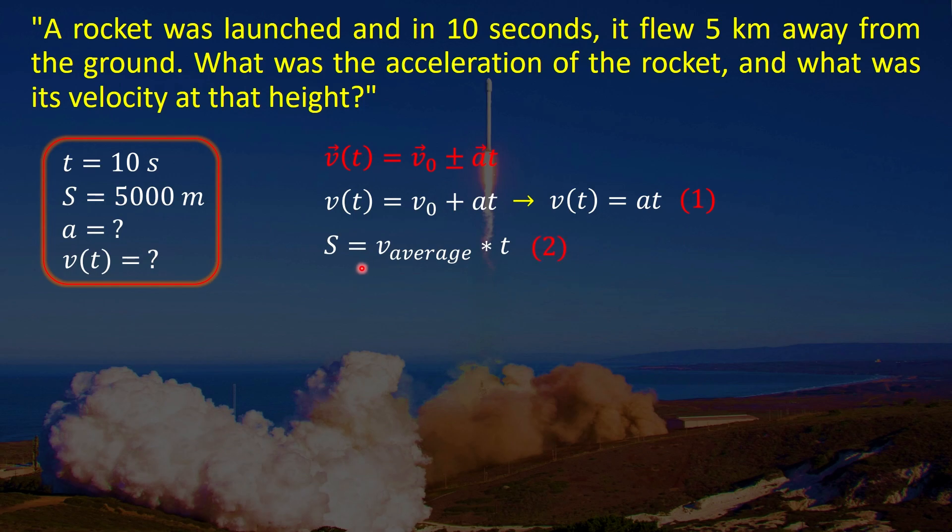To find the average speed we can use this formula. So here v₀ also equals 0. And instead of this speed we can just put this multiplication, a multiplied by t. Then we will get this expression. Now let's call this equation number 3.